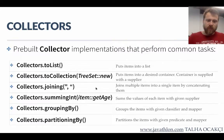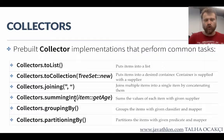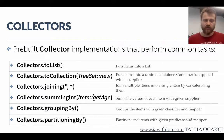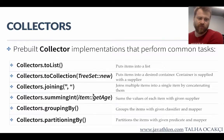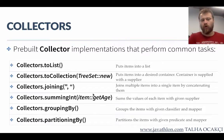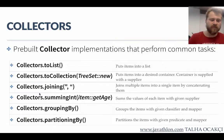The other one is summingInt(). According to the function you pass, this will sum up all the values and reduce them into a single integer result. For example, you say: get the age of each item and sum all of these age values into a single integer. We may use it to sum up the ages of all our employees.